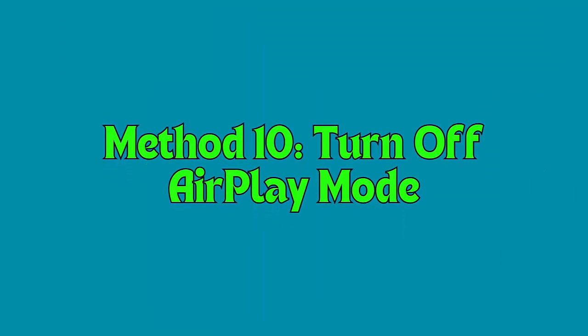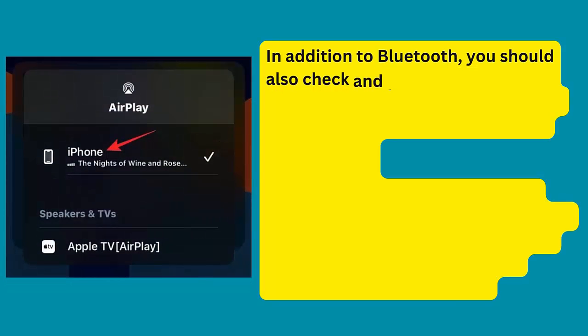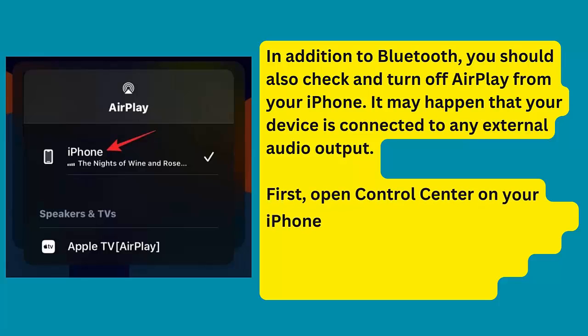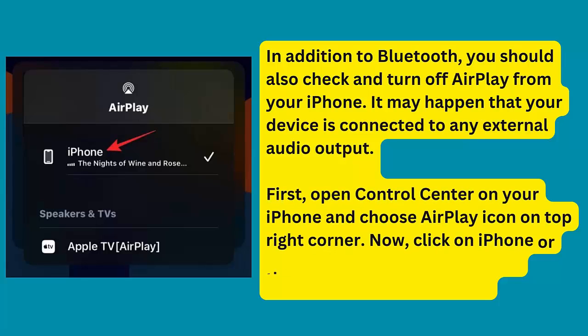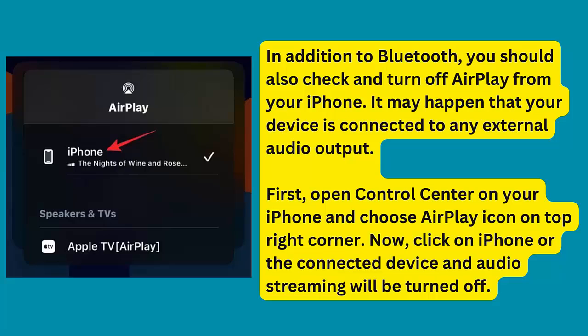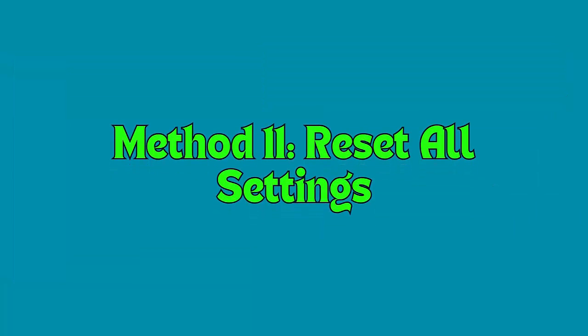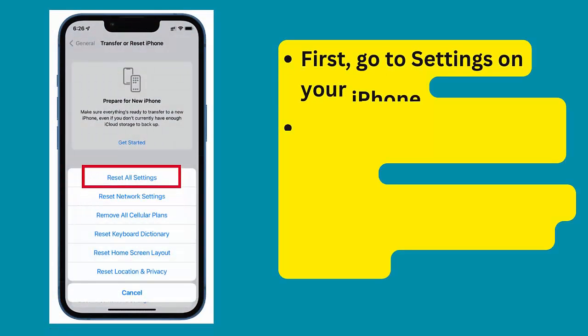Method 10: Turn off AirPlay mode. In addition to Bluetooth, you should also check and turn off AirPlay from your iPhone, as your device may be connected to an external audio output. Open Control Center, choose the AirPlay icon in the top right corner, click on iPhone or the connected device, and audio streaming will be turned off.